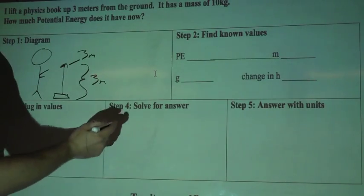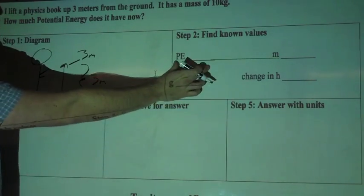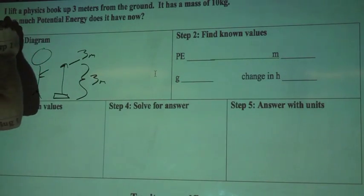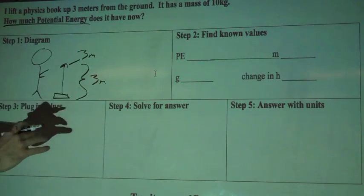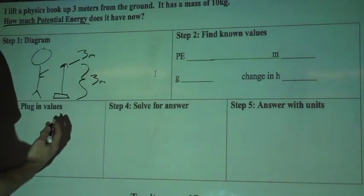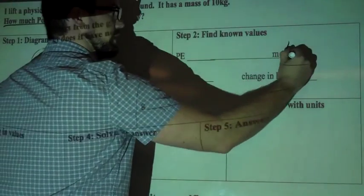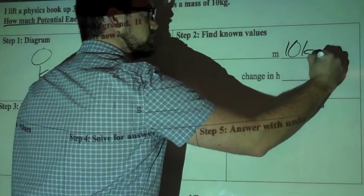So now we go to plug in our values. We've got potential energy - we're looking for how much potential energy it has, so I don't know that yet. M, that's our mass, so up here it says it has a mass of 10 kilograms, so I'm going to write 10 kilograms right here.